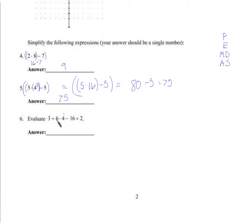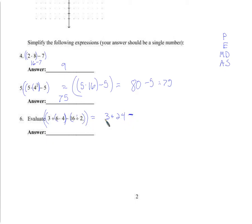Multiplication and division happen at the same time. This multiplication and this division can happen independently since they're in separate parentheses. Then once those are done we'll just have numbers, and I'll do addition and subtraction left to right. So in the innermost parentheses: 3 plus 6 times 4 is 24. Then subtract 16 divided by 2, which is 8. Working left to right: 24 plus 3 is 27, minus 8 is 19.